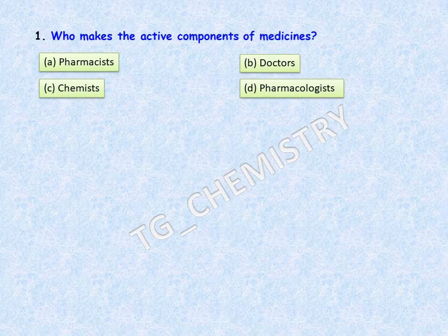First question: who makes the active components of medicines? Options are: A, pharmacists; B, doctors; C, chemists; D, pharmacologists. The correct answer for this question is option C, chemist.